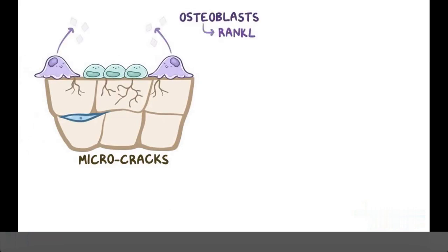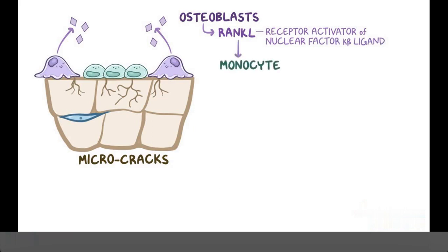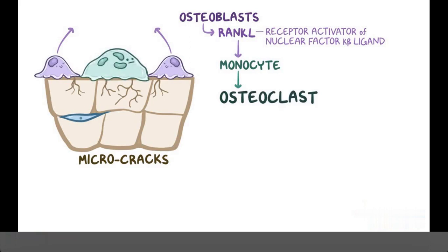a substance called RANK-L, or receptor activator of nuclear factor kappa beta ligand, which binds to RANK receptors on the surface of nearby monocytes. RANK-L induces those monocytes to fuse together to form a multinucleated osteoclast cell. RANK-L also helps the osteoclast mature and activate so they can start resorbing bones.